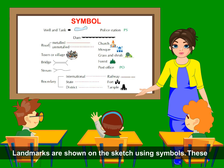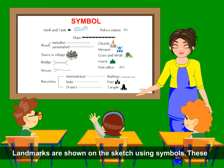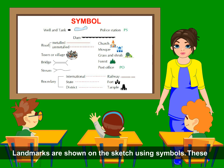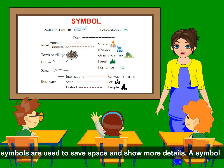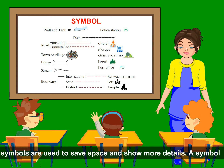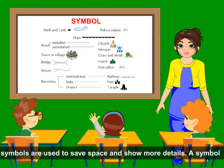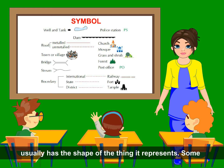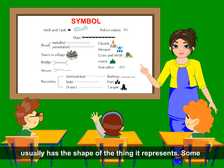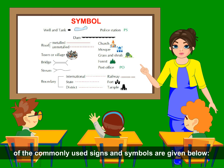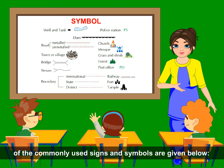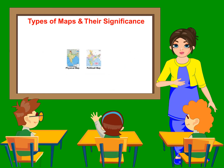Landmarks are shown on a sketch using symbols. These symbols are used to save space and show more details. A symbol usually has the shape of the thing it represents. Some of the commonly used signs and symbols are shown below.